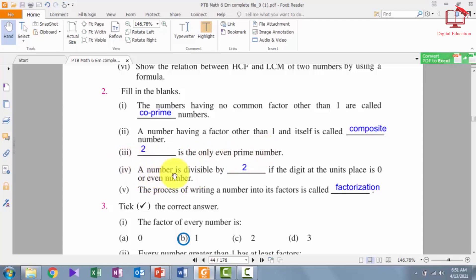4. A number is divisible by 2 if the digit at the unit place is 0 or even number.